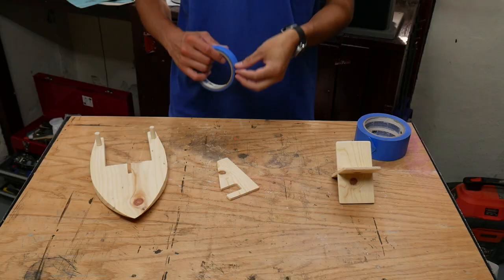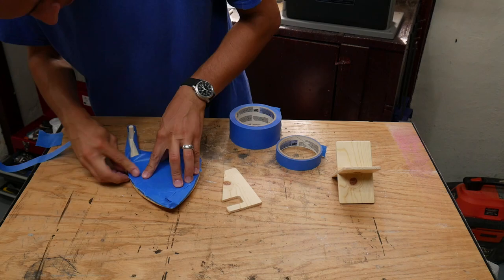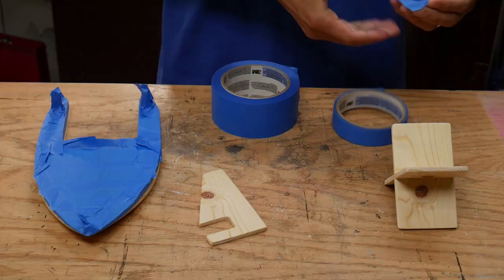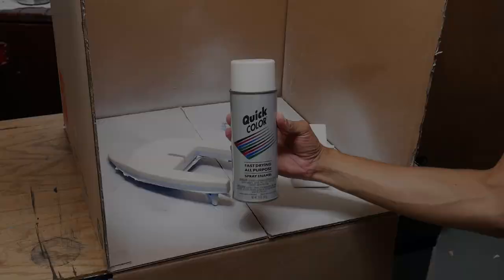The boat doesn't need to be painted but of course you can paint it. I decided on painting half of it so I masked off the top of the hull, the bottom of the posts, and the top of the keel. I got some spray primer and primed the pieces. Then I got some plain white spray paint and painted all the pieces.